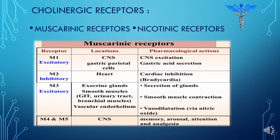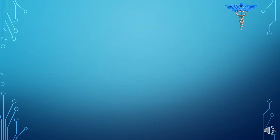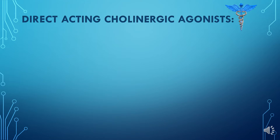M4 and M5 receptors are present in the central nervous system. Now, coming towards the direct-acting cholinergic agonists — the cholinergic agonist is basically a group of medicines that mimic the action of acetylcholine. In direct-acting cholinergic agonists, the drug will directly bind to the cholinergic receptors, either muscarinic or nicotinic.